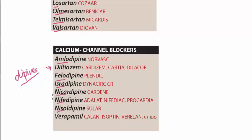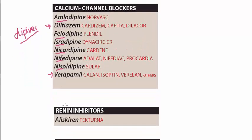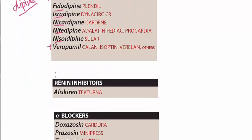Diltiazem and verapamil, which are also used to treat hypertension. These are the calcium channel blockers. And then we have renin inhibitor that is also used to treat hypertension — that is aliskiren.